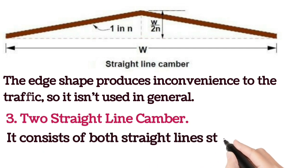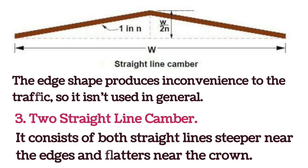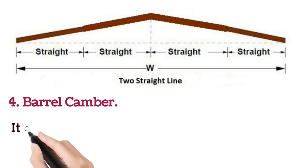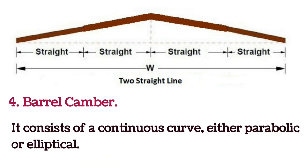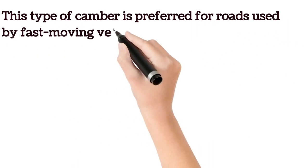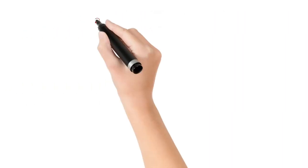Two straight line camber consists of two straight lines that are steeper near edges and flatter near the crown, with similar slope at the central portion and different slope at the edges. Barrel camber consists of a continuous curve, either parabolic or elliptical, and is preferred for roads used by fast moving vehicles. The equation for parabolic camber is y = 2x²/(n·w), where w is the width of carriageway, x and y are the horizontal and vertical distances, and n is the camber value (1 in n).